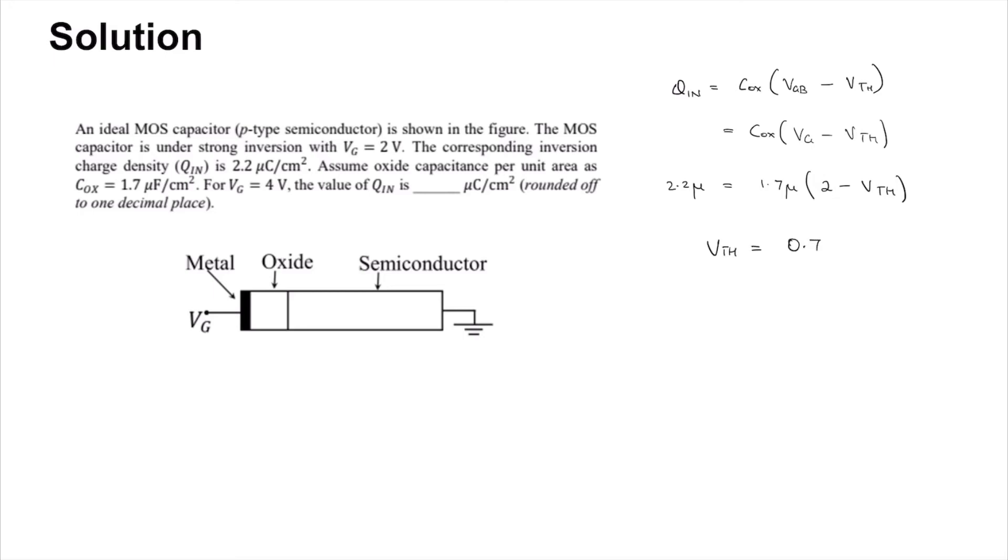which you will find to be approximately 0.7 volts. Next, you can substitute for QN such that VG is 4 volts and the threshold voltage is 0.7 volts. Solving this, you will get